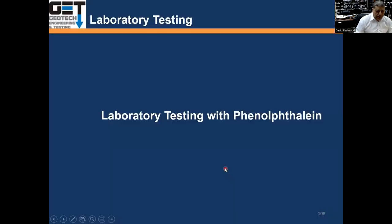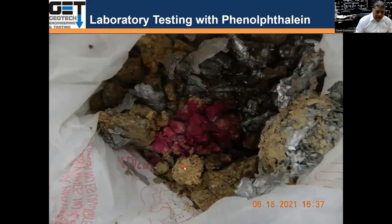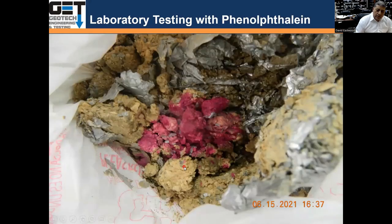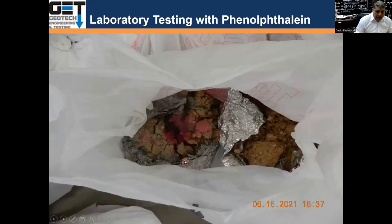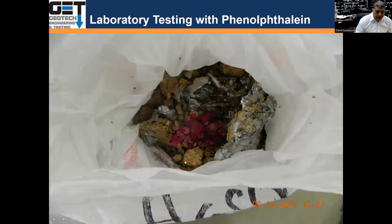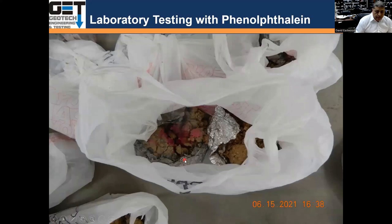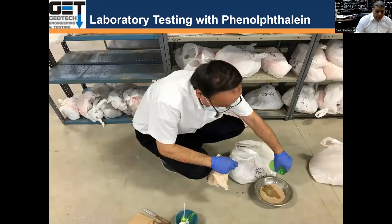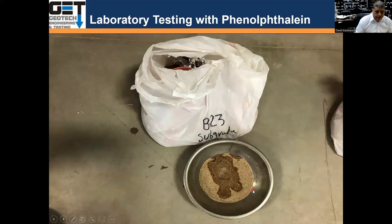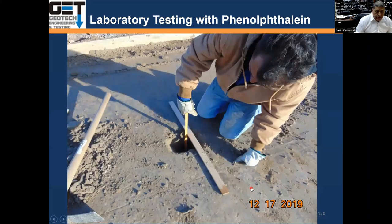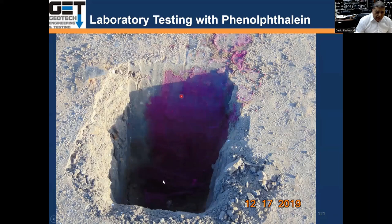We tested for lime using phenolphthalein. We take the samples and add phenolphthalein — the chemical reacts with lime and turns purple. We found lime in some places but did not find lime in other places. We also did a depth check to confirm the depth of lime stabilization; it should have been six inches. We checked the density of the asphalt cores and their gradation.